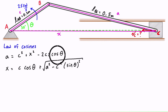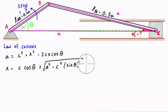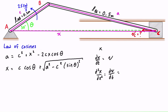The reason for using x is that whichever version of the law of cosines we choose, we're going to differentiate it twice with respect to time. If we have x, then dx/dt is the first derivative with respect to time, which equals velocity, and d²x/dt² is the second derivative, which equals acceleration.